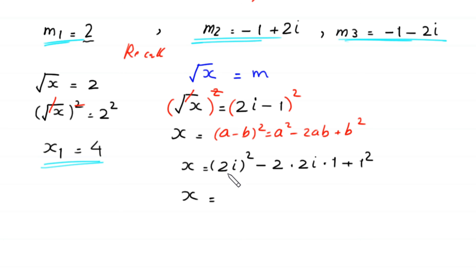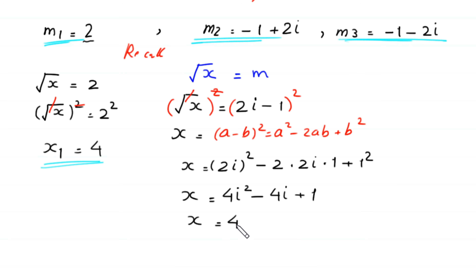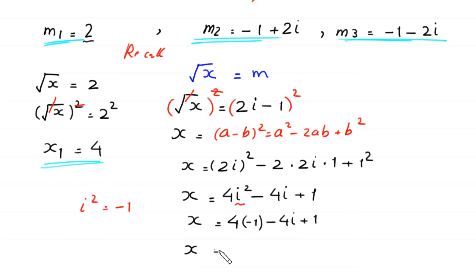So x is equal to 4i squared minus 4i plus 1. Now i squared is equal to negative 1, so in place of i squared we put negative 1: 4 times negative 1 is negative 4. So x equals negative 4 minus 4i plus 1, which gives negative 3 minus 4i. This is the second value of x.